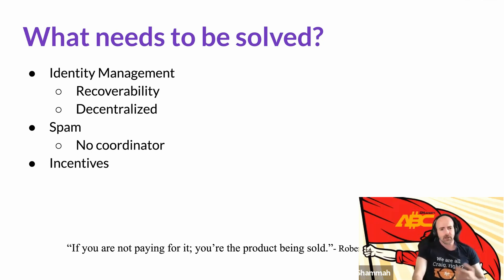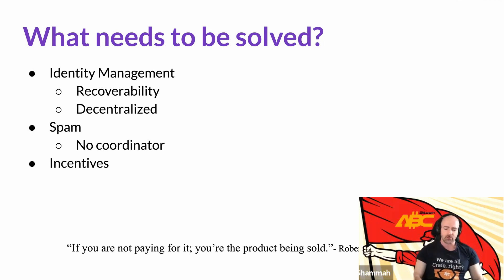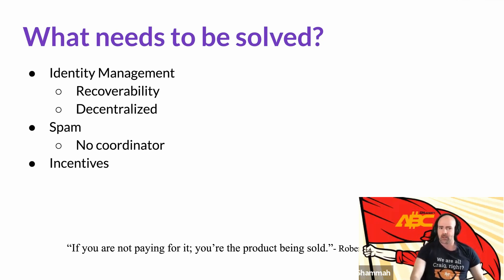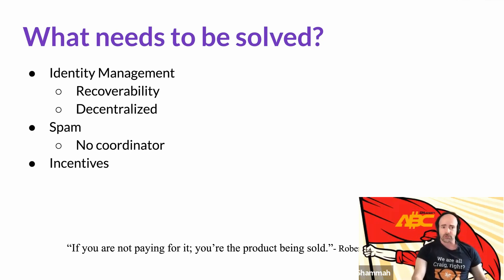The identity also needs to be decentralized — you don't want some company to have access to revoke your identity or censor you online. But if there's no central manager, you need a way to combat spam and you need incentives for people to run the infrastructure involved in this.